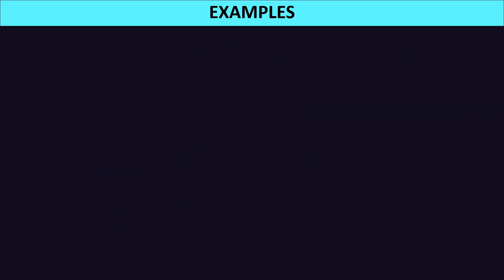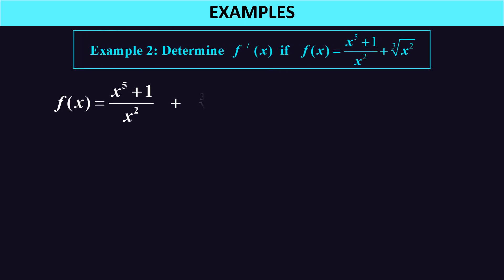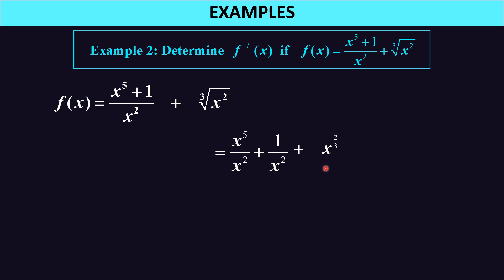Let's look at the second example. We have f(x) equal to (x⁵ plus 1) divided by x², plus the cube root of x squared. We first need to simplify: x⁵ divided by x² plus 1 divided by x², and convert the cube root to x to the two thirds. Simplifying further: x⁵ over x² is x³, 1 over x² is x to the negative 2, plus x to the two thirds. Now we're ready to differentiate.